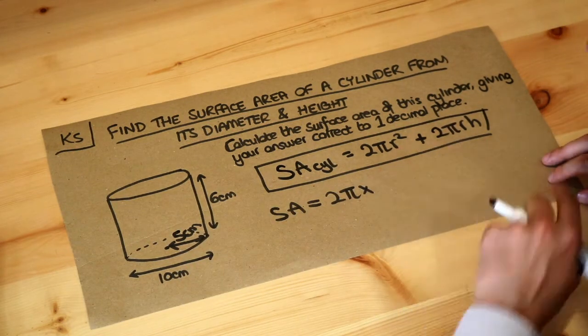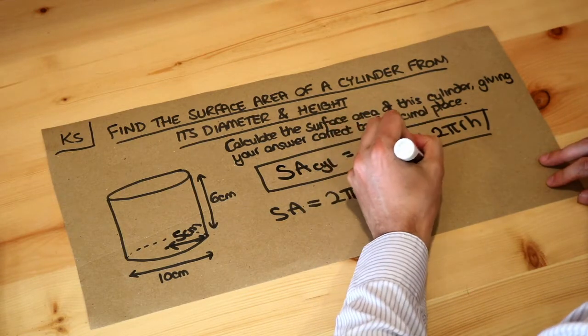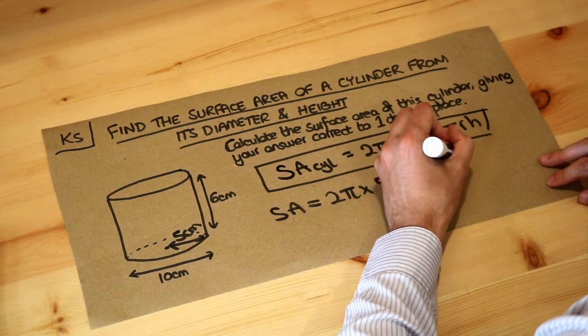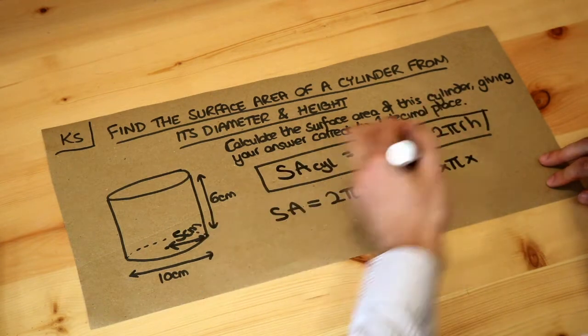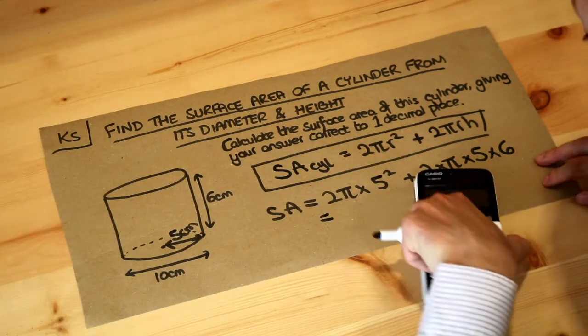So that's going to be 5 squared plus 2 times π times r, which is 5, times by the height, which is 6. Then if we just type that all into our calculator.